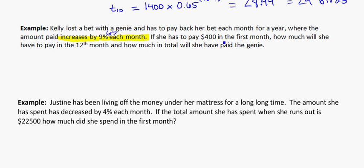And if she has to pay $400 in her first month, well her first month, that's A equals 400. How much will she have to pay in the 12th month, and how much total will she have paid the genie? So here we're looking at, we know this, in the first instance she pays $400.